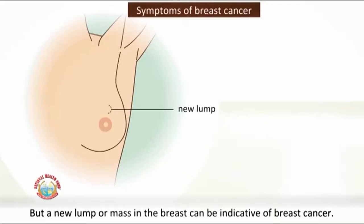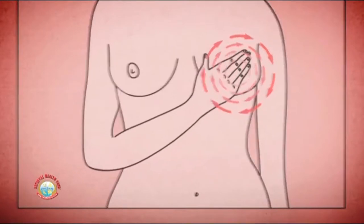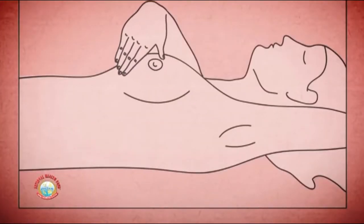Symptoms of breast cancer can vary. The common or usual presentation is that a woman would find a lump in the breast — sometimes incidentally while doing a self-breast examination, or they may notice a change in the appearance of the breast and when examined they find a lump.